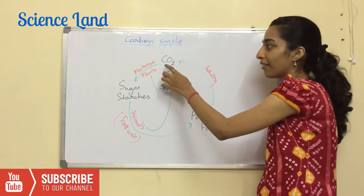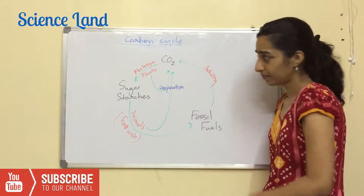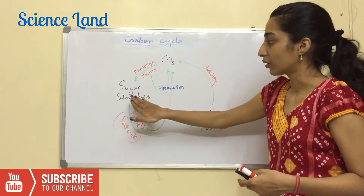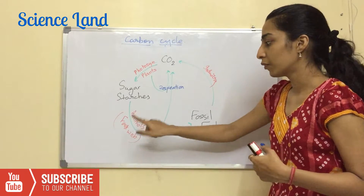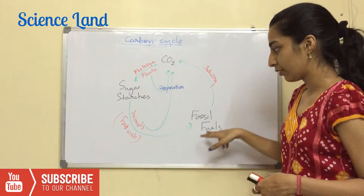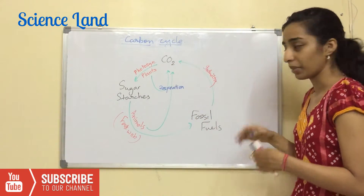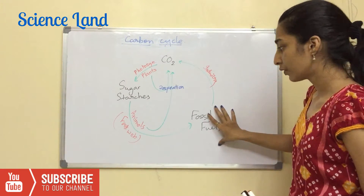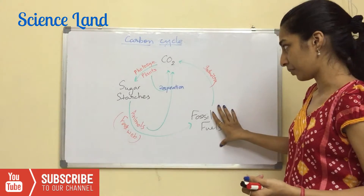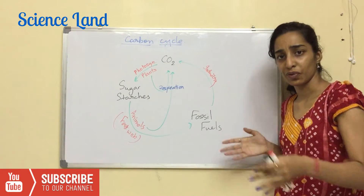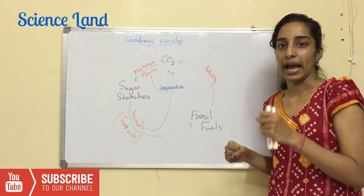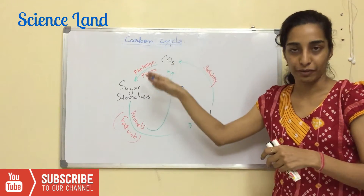Now here is the diagrammatic representation of the carbon cycle. We have carbon dioxide in the atmosphere. Plants use photosynthesis to convert CO2 into food, which is used by animals through the food chain. If the animal lives, respiration takes place. If it dies, fossil fuels are formed — coal, natural gas, and others.